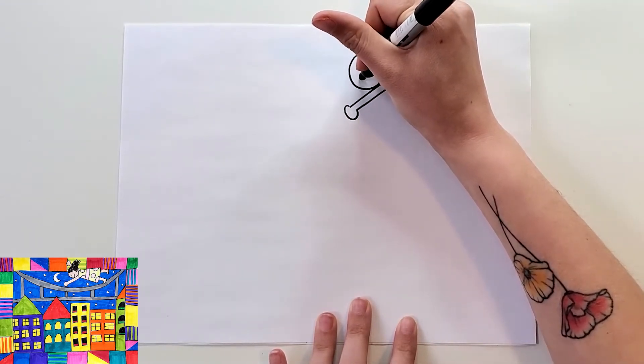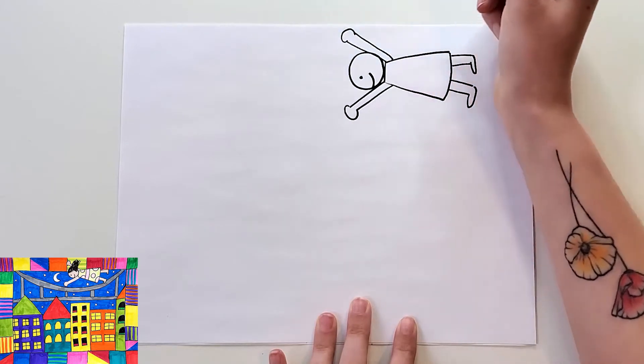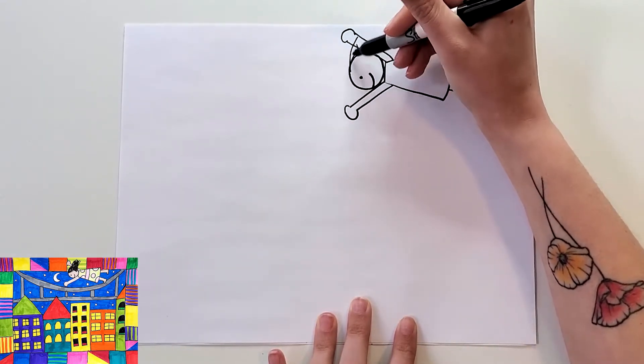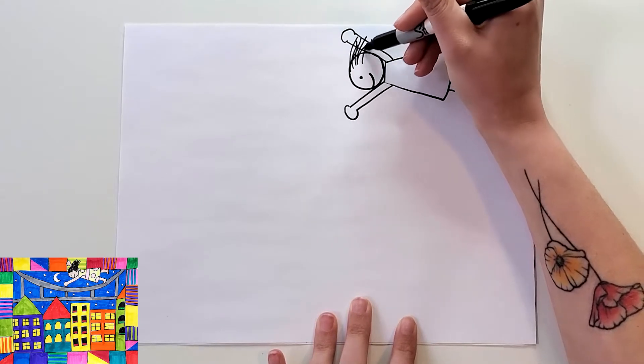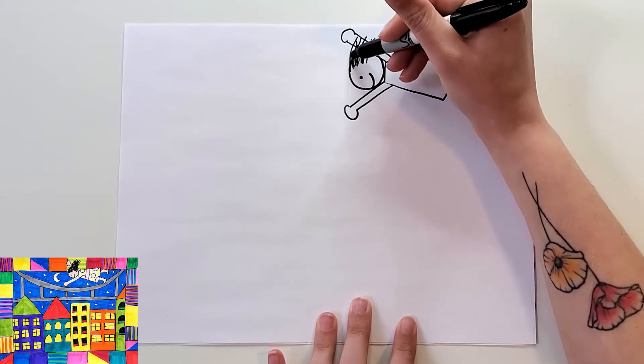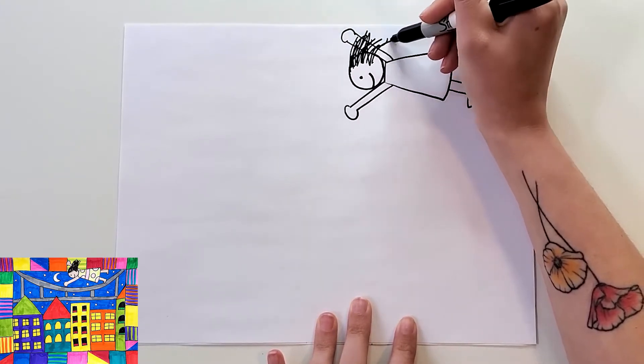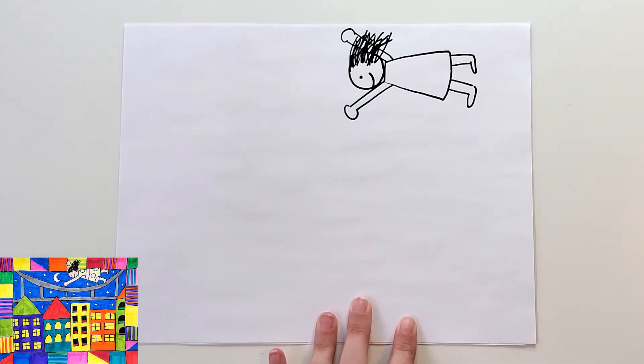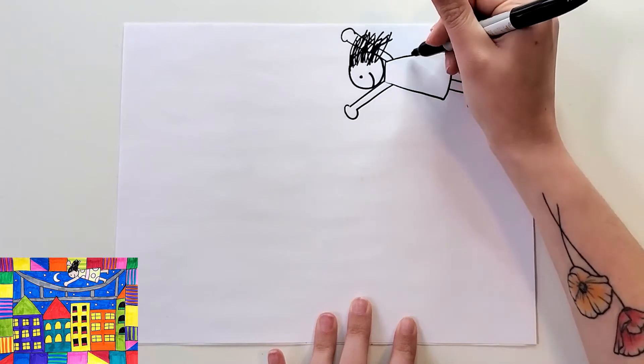I'm going to have the eye over here with a smile because she's looking to the side. Then you can have the hair kind of flowing. If you want to add any patterns to the dress, you could do that too.